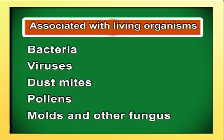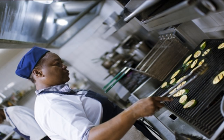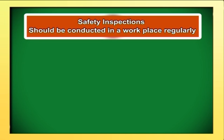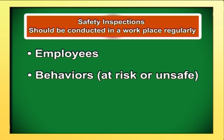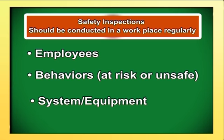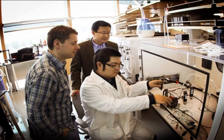Biological hazards are associated with living organisms: bacteria, viruses, dust mites, pollens, molds and other fungi. Method of identification: workplace inspections prevent hazards. Regular workplace inspections are an important factor in preventing injuries and illnesses. By critically examining all aspects of the workplace, inspections identify and record hazards that must be addressed and corrected. A workplace inspection should include safety inspections conducted regularly, equipment and tools, work environment, work practices and procedures, employee behaviors, systems or equipment, process or procedure, safety training, listening to the concerns of workers and supervisors, identifying existing and potential hazards, and monitoring hazard controls such as personal protective equipment, engineering controls, policies and procedures.